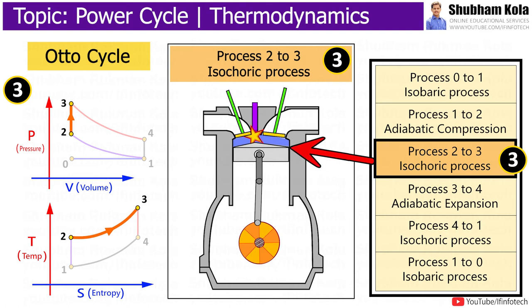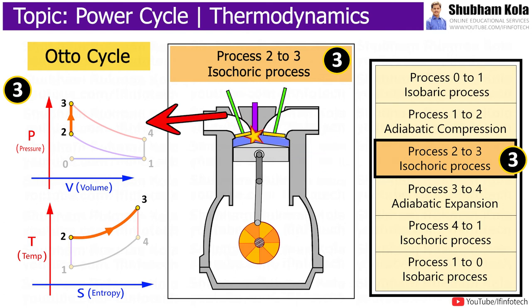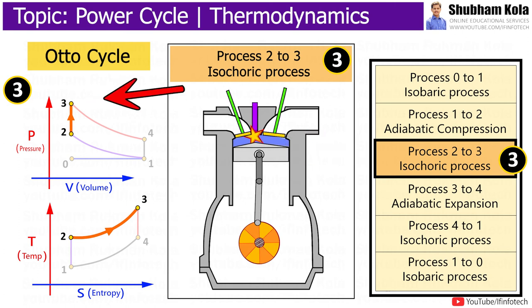Process 2 to 3 is an isochoric process, where combustion occurs due to ignition of the fuel by the spark plug at constant volume. The combustion of gas is complete at point 3, which results in a highly pressurized chamber with a large amount of thermal energy.